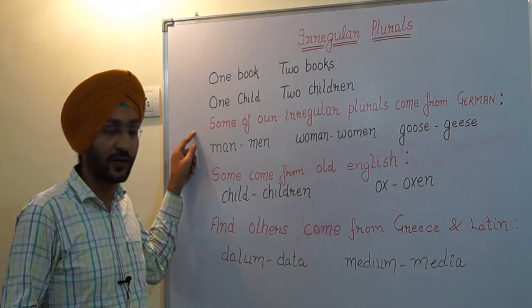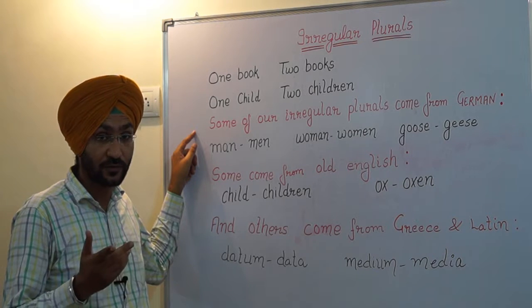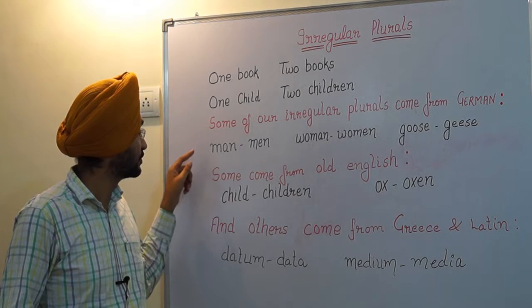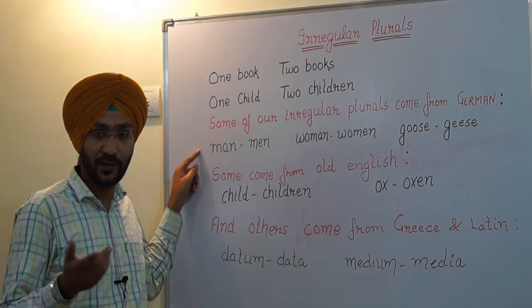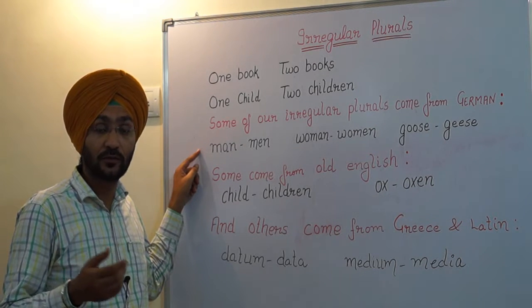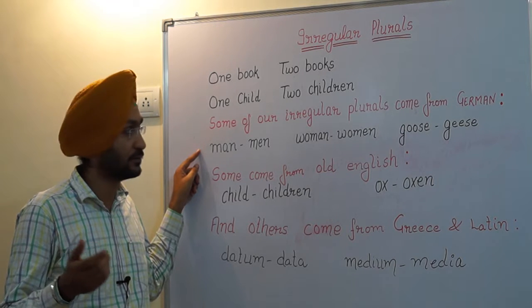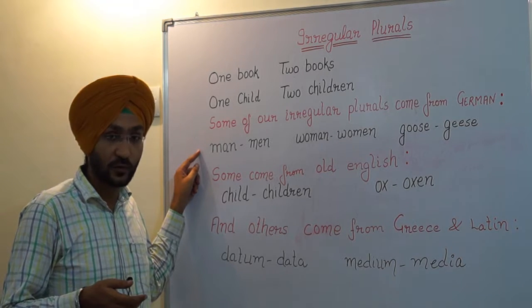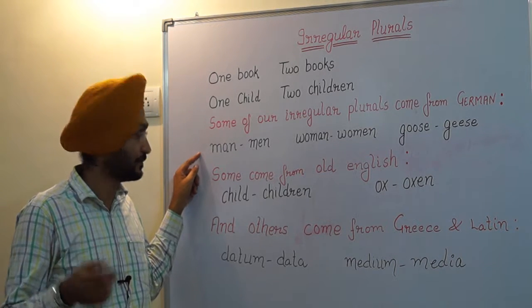For example, some of our irregular plurals come from German: man, men; woman, women; goose, geese.